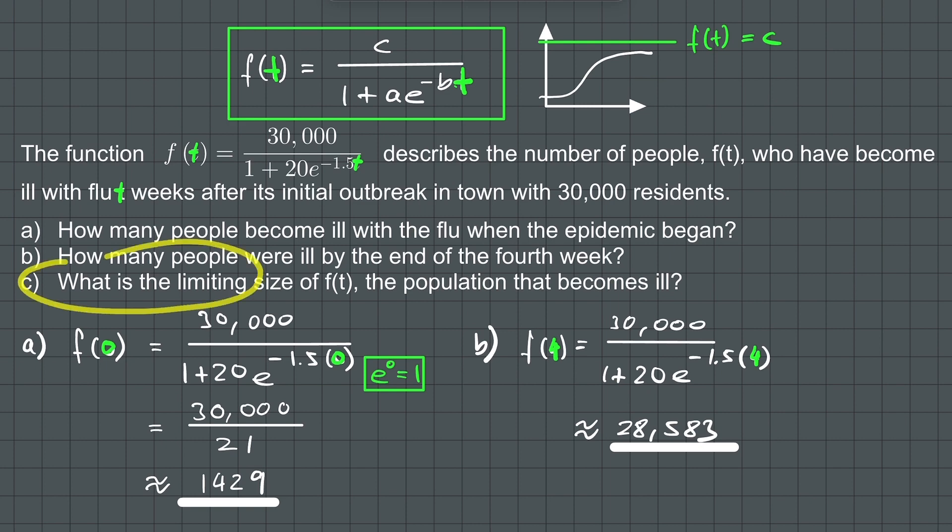What is the limiting size of f(t), the population that becomes ill? Recall that in the logistic growth model f(t) equals c over 1 plus a times e raised to the power of negative b times t, the constant c represents the limiting size that f(t) can attain. So 30,000 is the limiting size of the population that becomes ill and we are done with this problem.